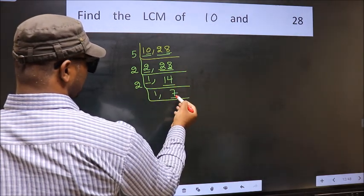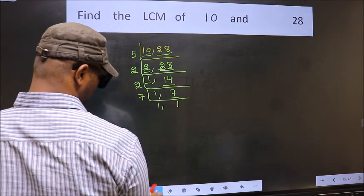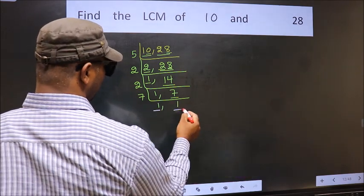Now we have 7. 7 is a prime number. So 7 times 1 is 7. So we got 1 in both the places.